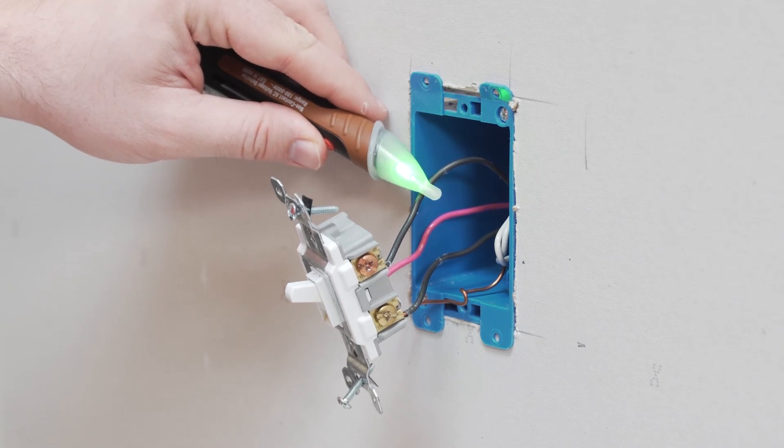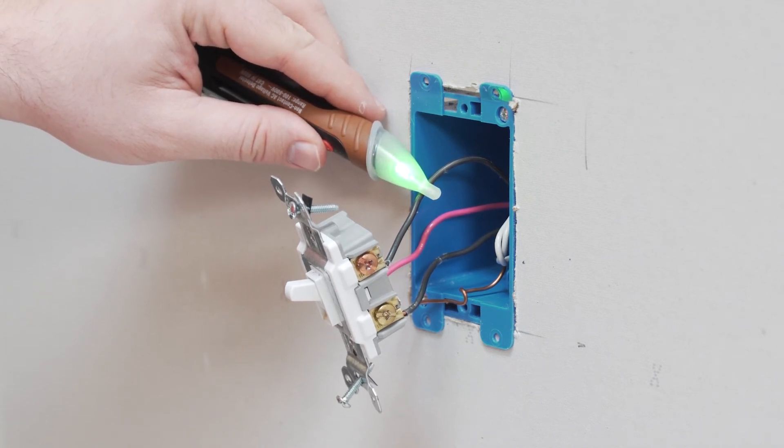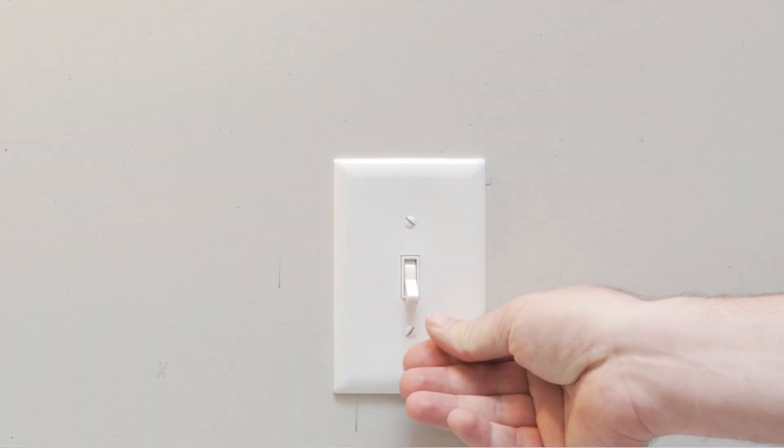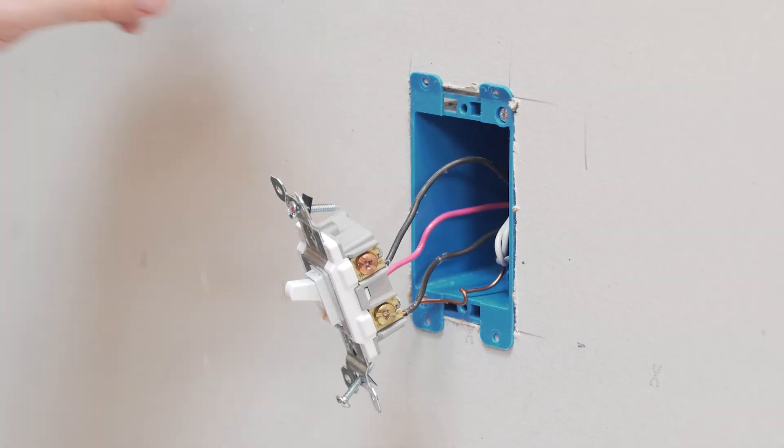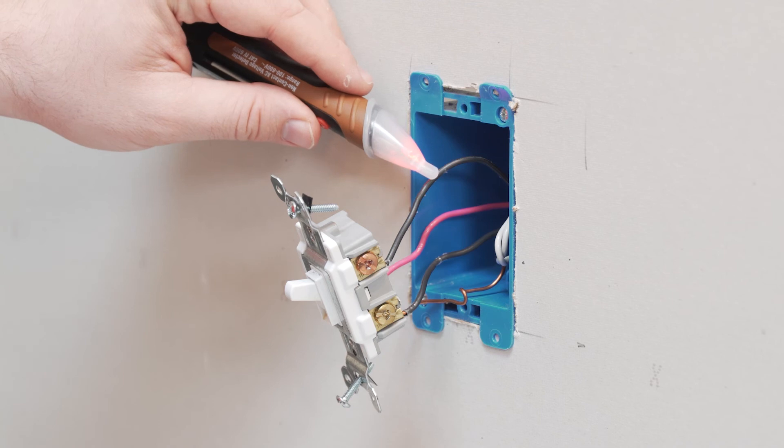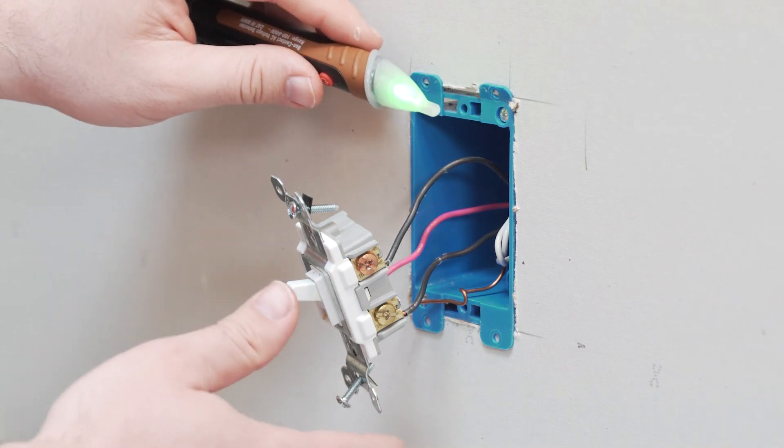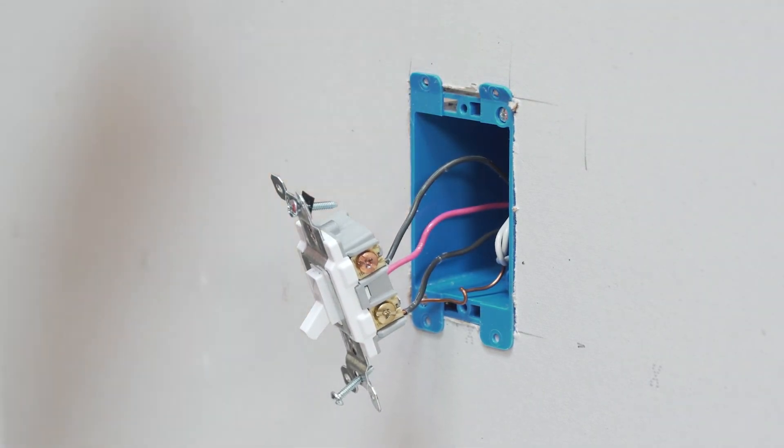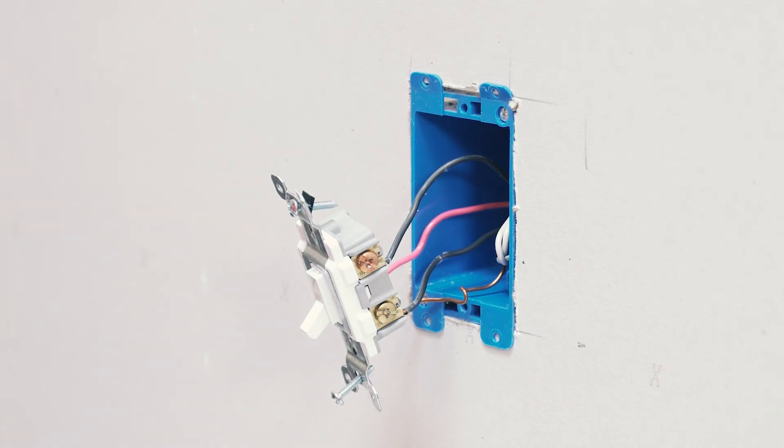You'll notice that there's no voltage detected while the light is off. If you turn the light on at the other location, you'll notice that you're detecting voltage. Then you'll just want to mark this again so that you can remember what it is when we're installing the audio switch.